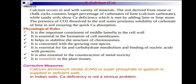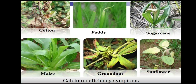Calcium is also essential for counteracting metal toxicity — when iron toxicity occurs, calcium can suppress it. Calcium is immobile in plant tissue, so deficiency occurs on younger leaves. Calcium ammonium nitrate (CAN), super phosphate, or gypsum are supplied to deficient soils. In Indian soils, calcium deficiency is not a serious problem. Deficiency symptoms in cotton, paddy, sugarcane, maize, groundnut, and sunflower cause whitish color and tip die-back.